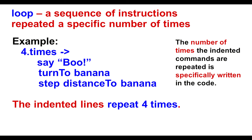A loop is a sequence of instructions and the loops we have learned are repeated a specific number of times. There's a dot after the number. The number comes before the dot, telling us how many times the indented lines repeat.